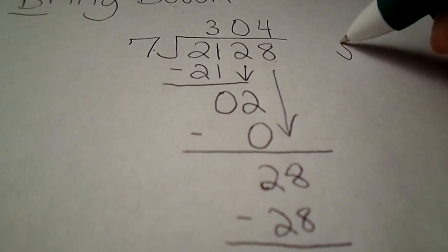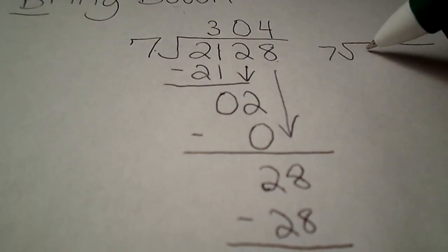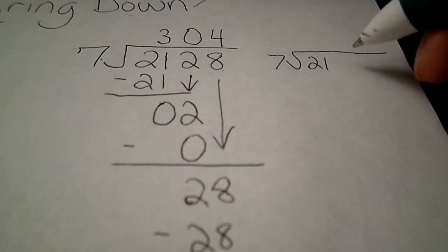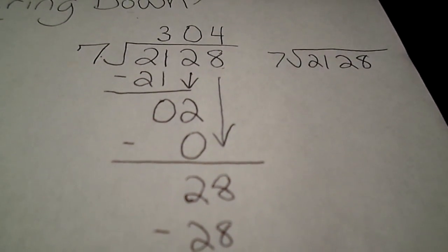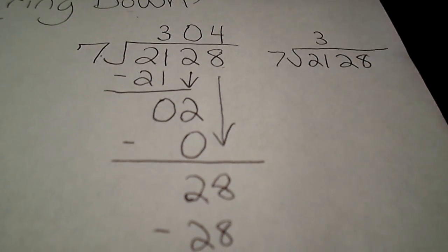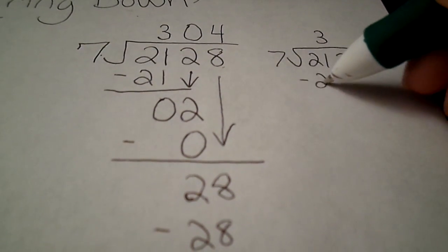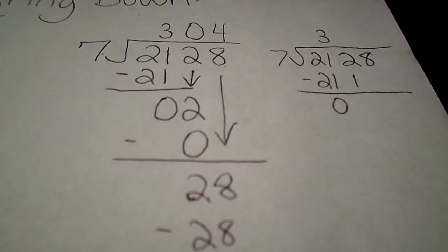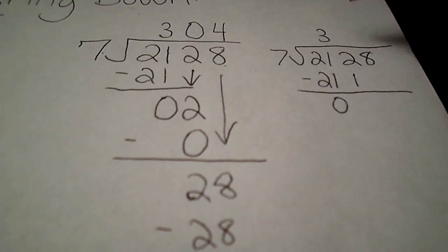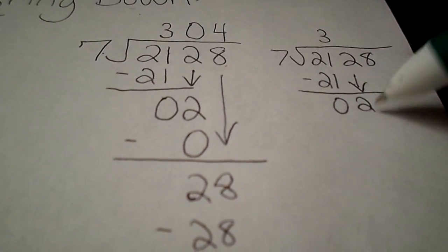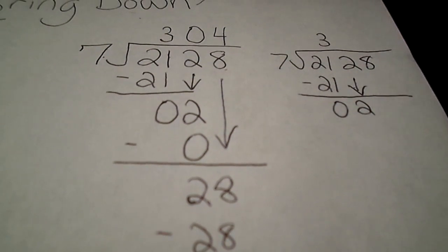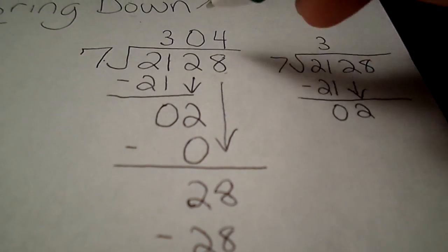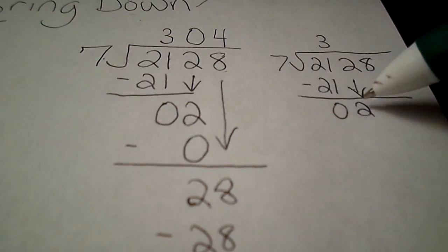So now another thing. I'm going to use the same problem. But I'm going to show you something different and you can compare the two. So I'm just going to do it real quickly. So at this point here I drop down to 2. And as I said 7 can't go into 2.